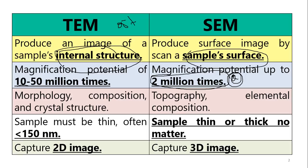As explained, SEM gives us information about the surface — how the surface looks. When we change the mode of the machine from electron to X-ray, we get elemental composition, and that we call EDX. I made a video on EDX. By changing the mode from electron to X-ray, it gives us information about the elemental composition.